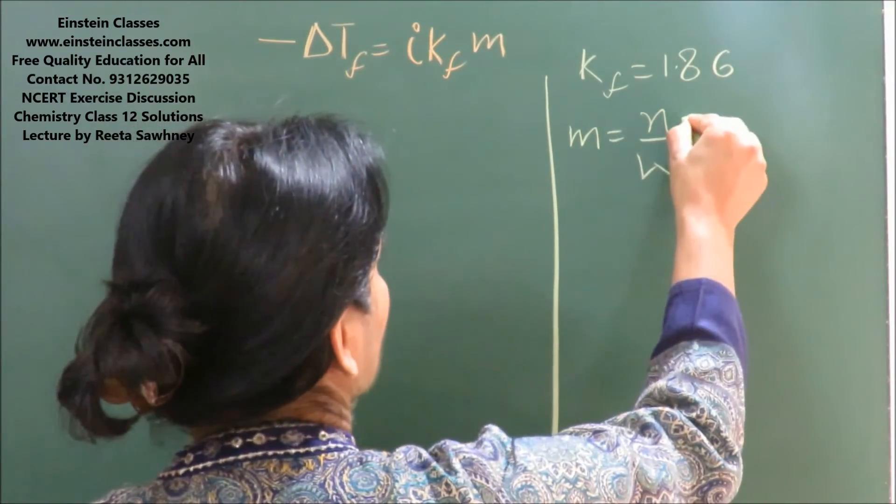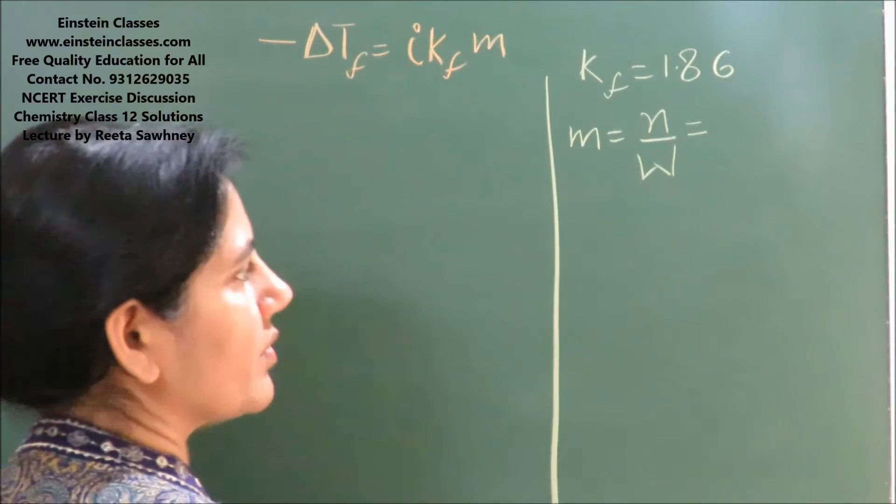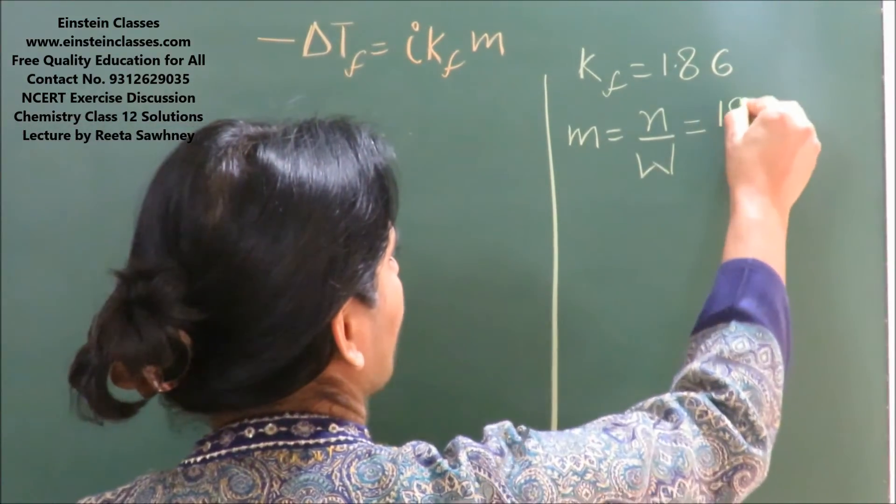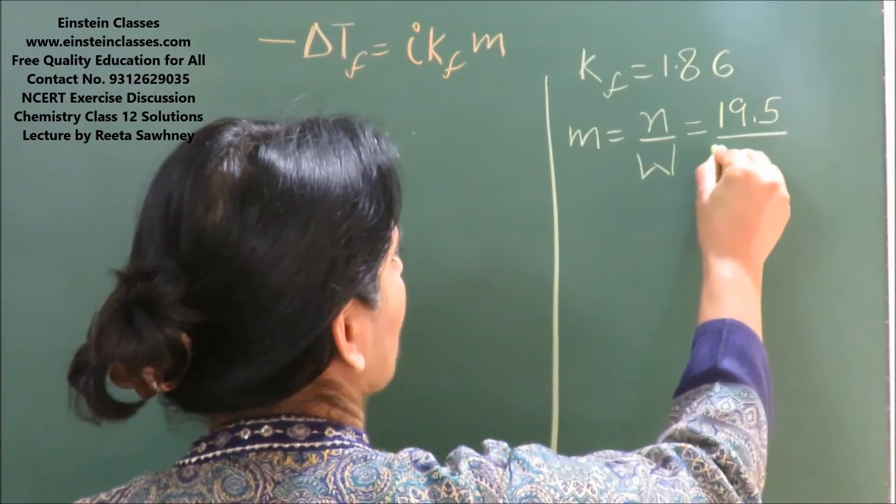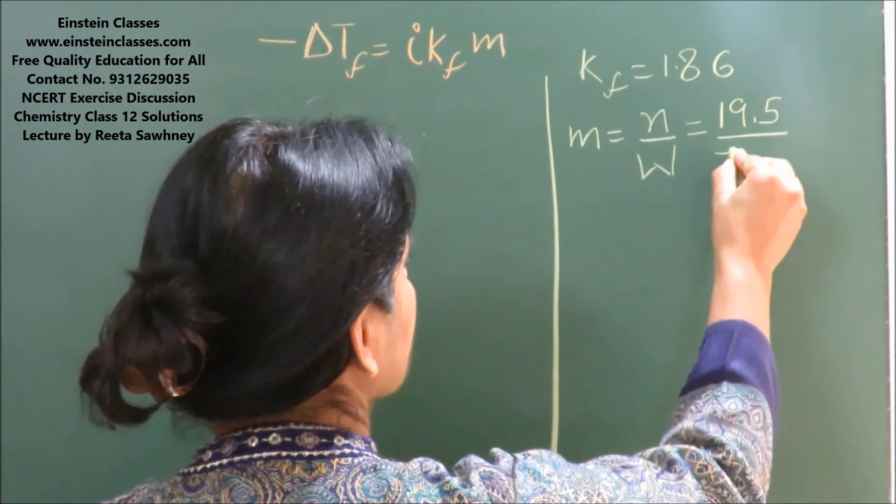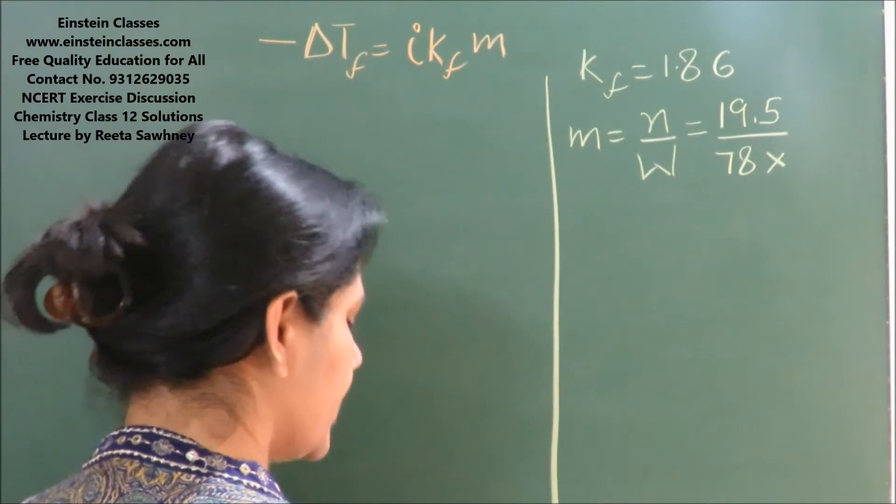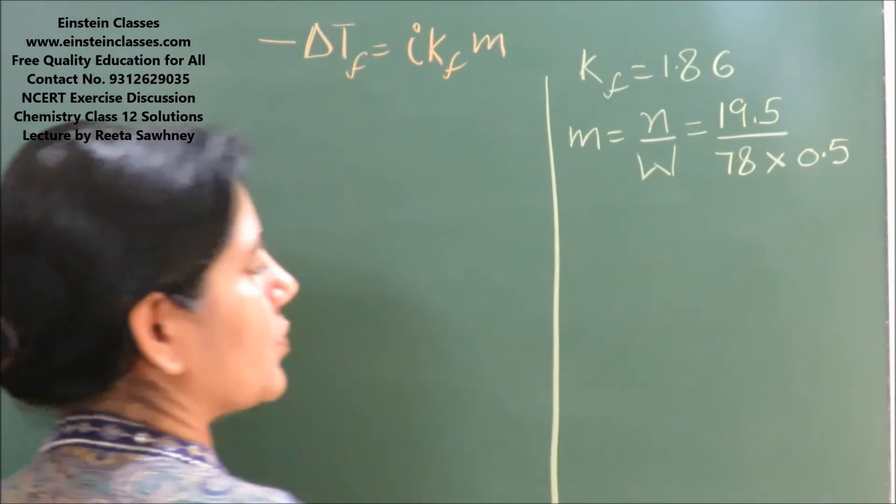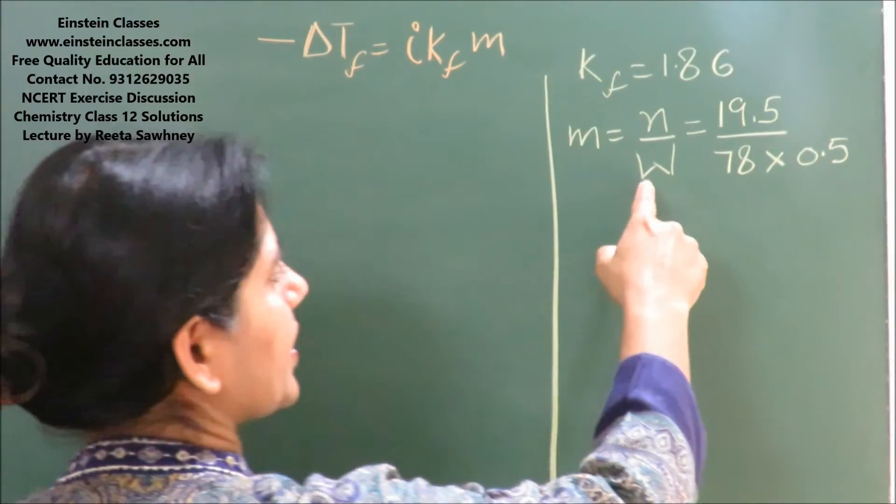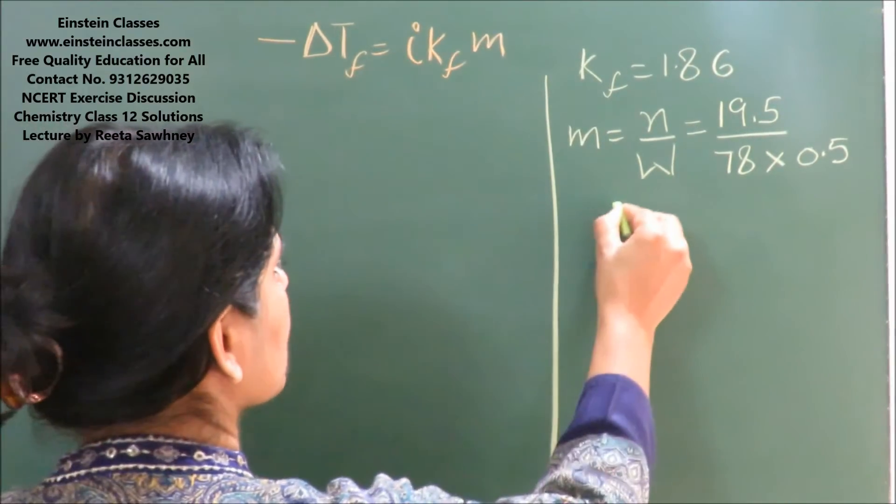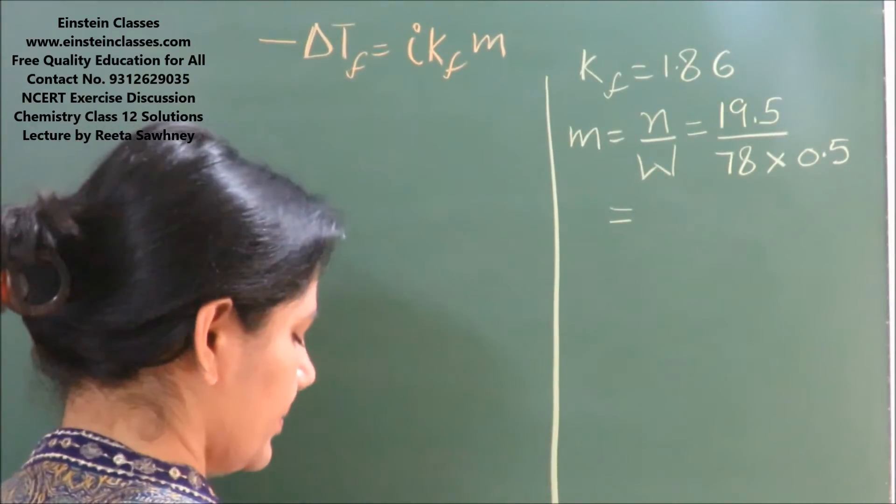Mole of solute can be calculated by given mass by the molar mass. The mass of the solute is 19.5 gram and the molar mass of fluoroacetic acid is 78 gram. The mass of the solvent is 500 gram. In case of molality, we need to take the mass of solvent in the units of kilogram, so the molality will come out to be 0.5 molar.